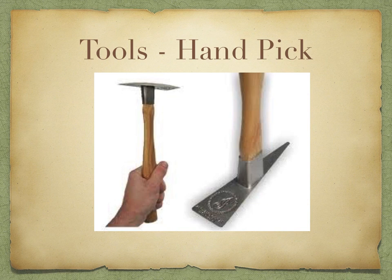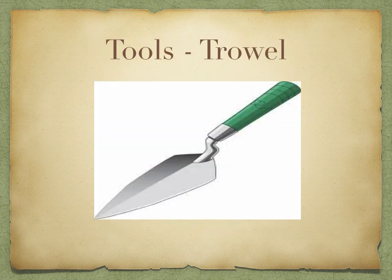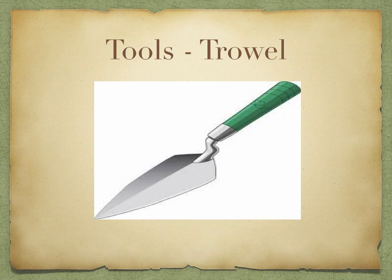Not everything is going to be easily accessible in the ground, so sometimes you'll need a hand pick to move stone or material that the shovel won't handle. Next, a trowel is used to move through the soil more carefully and to keep the sides of your section neat — almost like building a small wall — to stop it from collapsing.